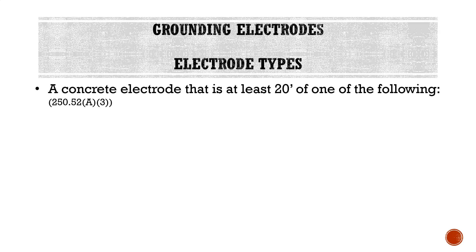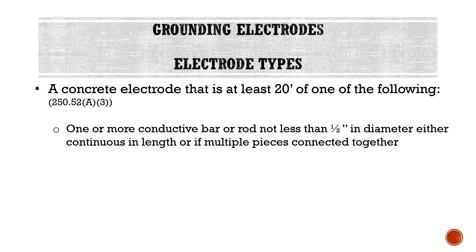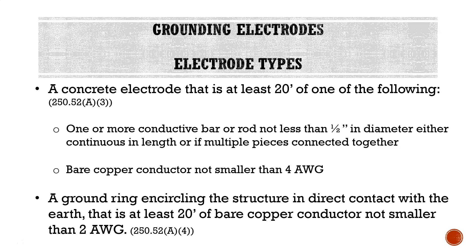A3, a concrete encased electrode that is at least 20 feet of one of the following: one or more conductive bar or rod, not less than a half inch diameter, either continuous in length or multiple pieces connected together; or bare copper conductor, not smaller than 4 AWG. A4 is a ground ring encircling the structure in direct contact with the Earth that is at least 20 feet of bare copper conductor, not smaller than 2 AWG. Keep in mind, these wire sizes are minimums — we can be required to use a larger wire size, but we do have a minimum.